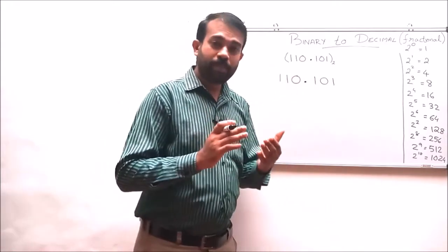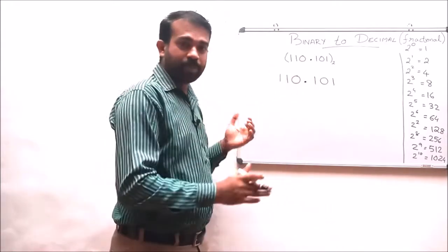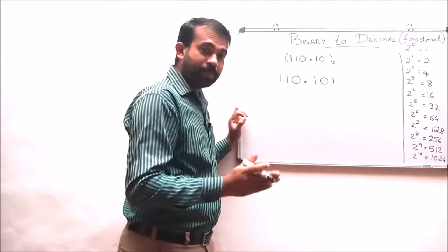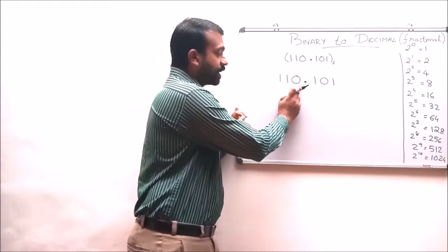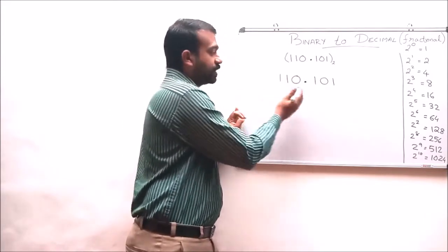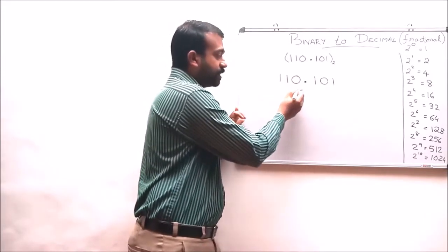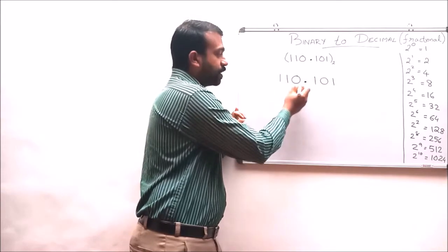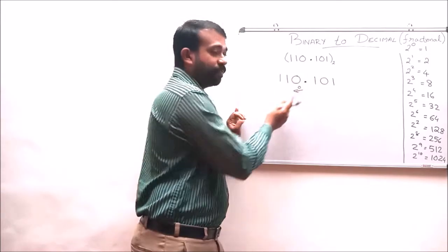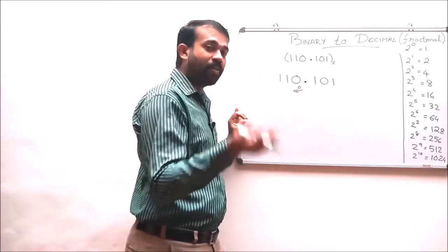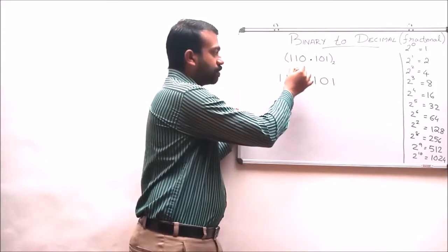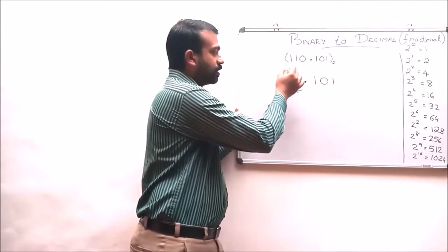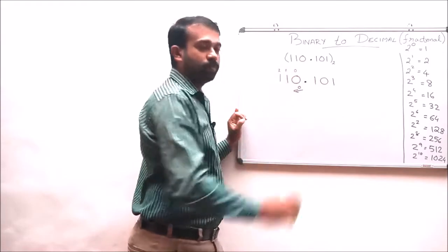In the whole number portion, the digit positions are counted from right and moving towards the left, starting from 0 with an increment of 1. So the digit position of this number is 0, this number is 1, and this number is 2.